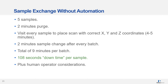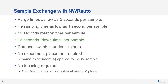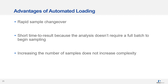If we review the process without sample automation, you can see that switching out the chamber has a drastic effect on sample throughput. Here is the sample exchange using NWR Auto. With the automation of the sample introduction, sample throughput is increased by a factor of 10, and operator involvement is significantly reduced. Some of the advantages of automating loading and sample changeover include rapid changeover from sample to sample, a short time to result since we don't have to wait for the chamber to be set up and purged each time, and a reduction in complexity — increasing the number of samples does not increase complexity.